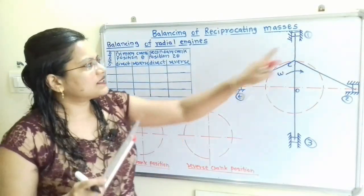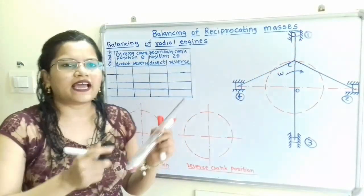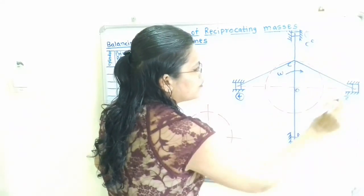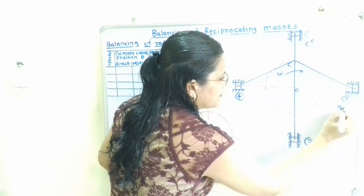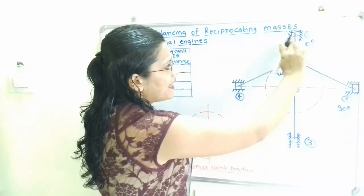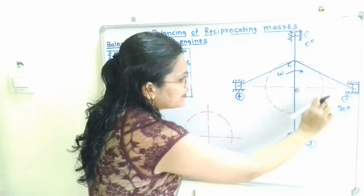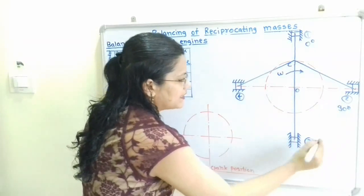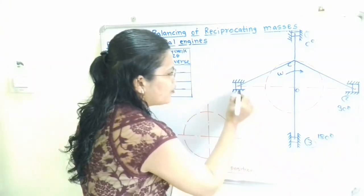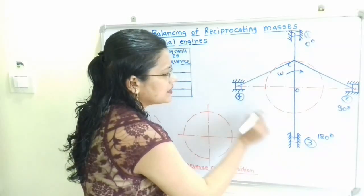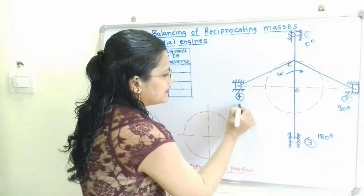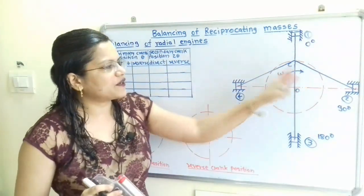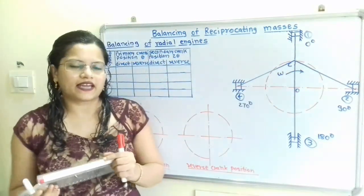Cylinder 1 is at 0 degrees. The angle between cylinders 1 and 2 is 90 degrees. For the Direct Crank method, the crank OC rotates clockwise: cylinder 1 is at 0°, cylinder 2 at 90°, cylinder 3 at 180°, and cylinder 4 at 270°. These are the angles used in the Direct Crank method.